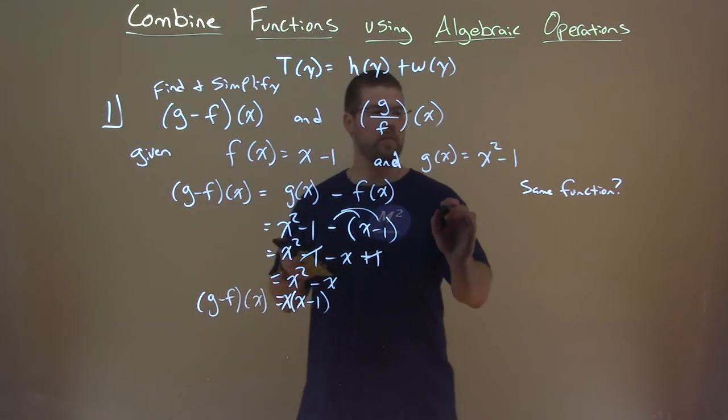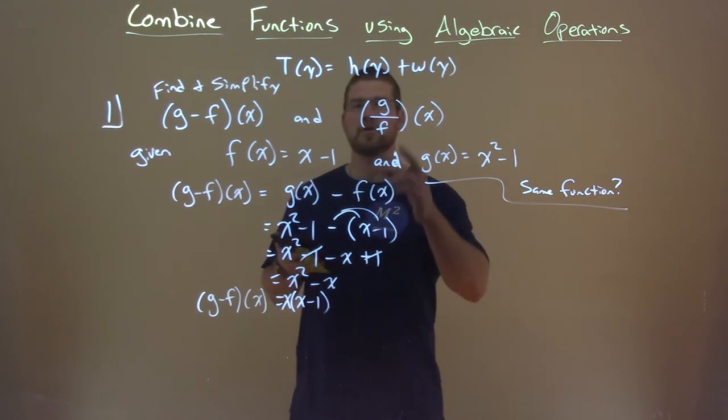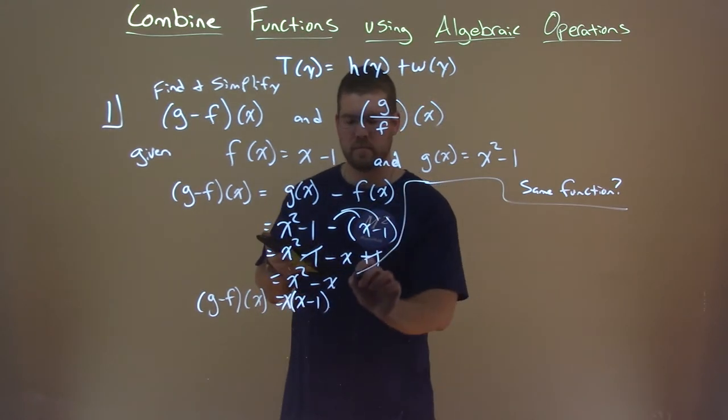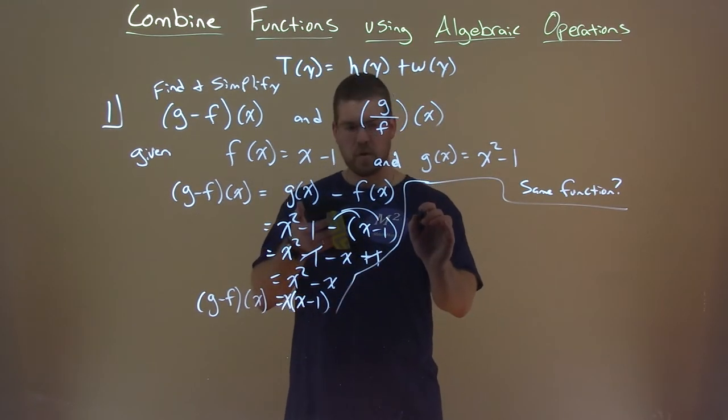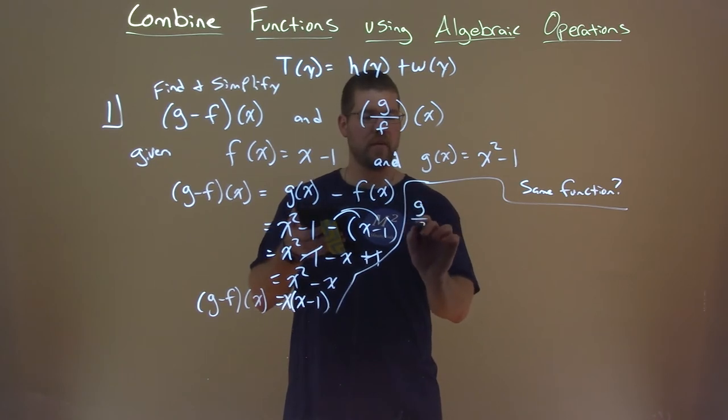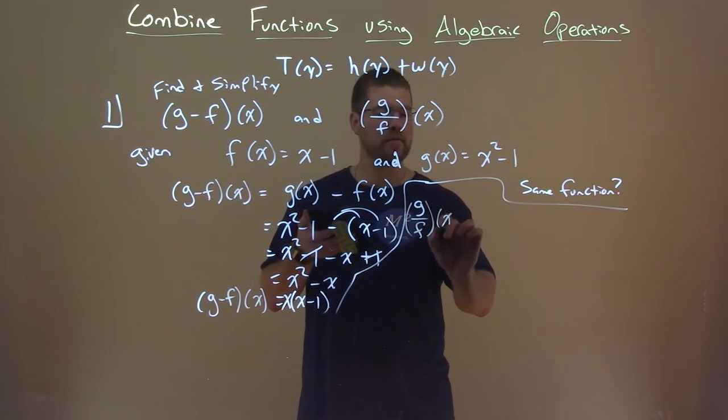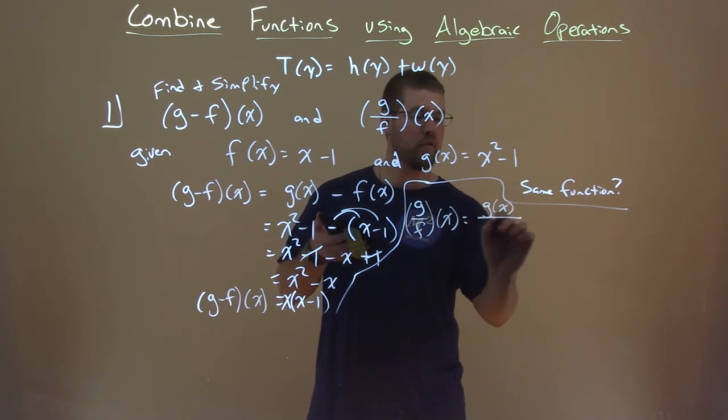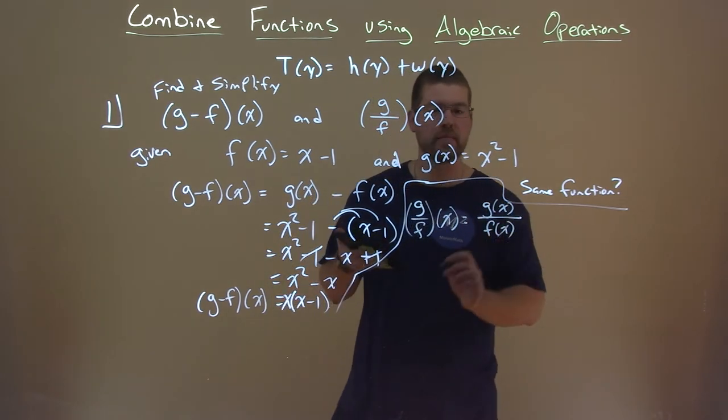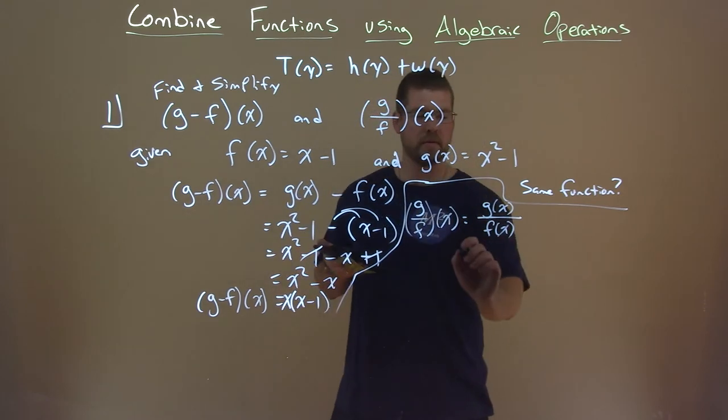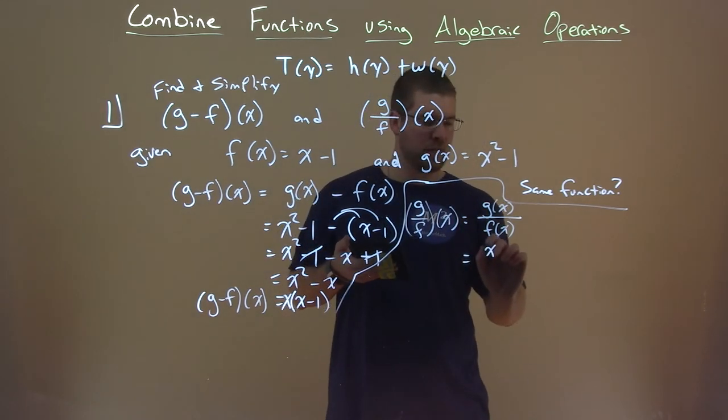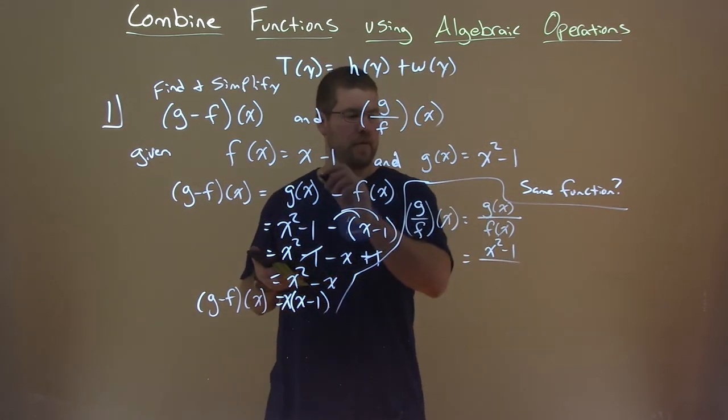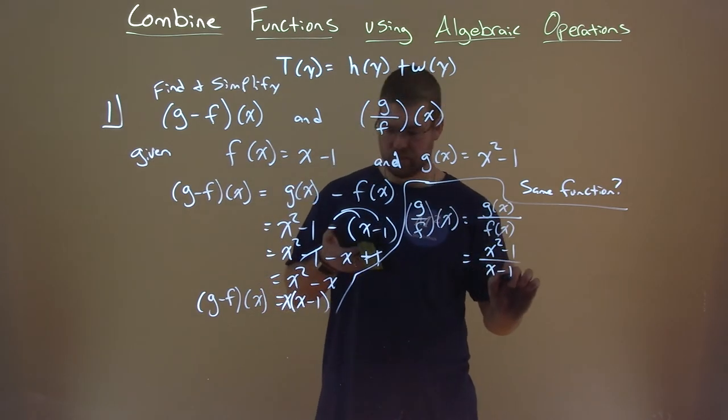Well, what about the other part here, g divided by f of x? Okay, so let's go with that. g divided by f of x. What does that equal? Well, that's g of x over f of x. So we plug both of those in. g of x is x squared minus one, and f of x is x minus one.